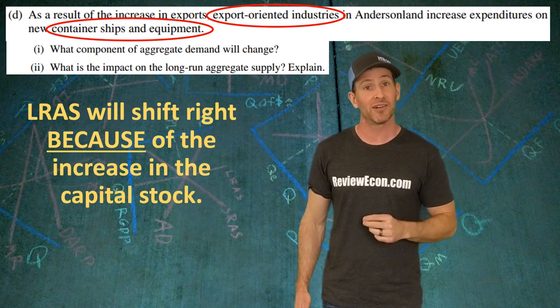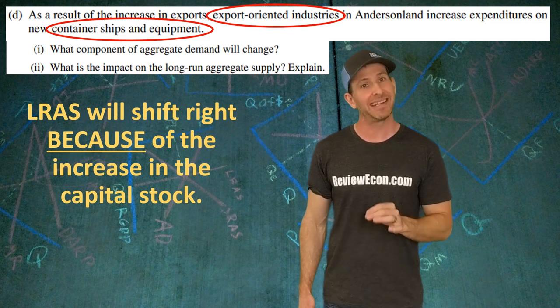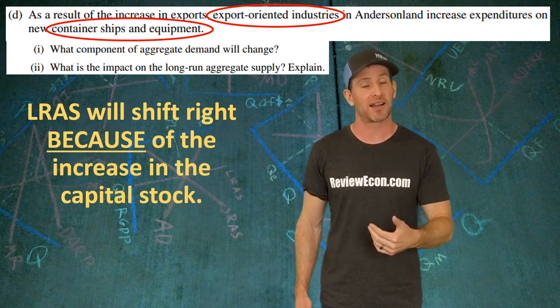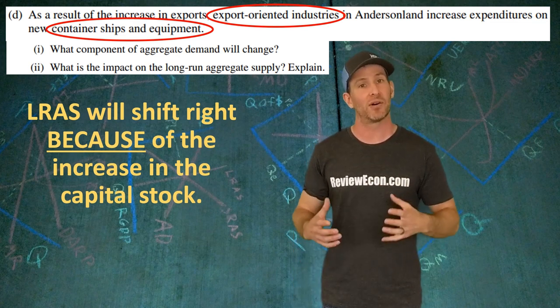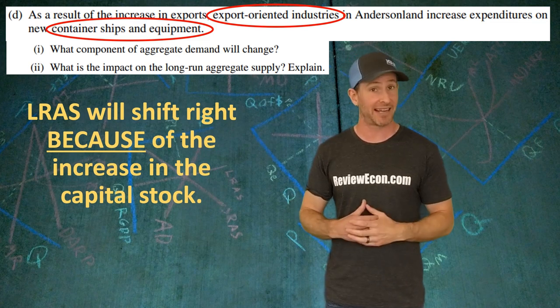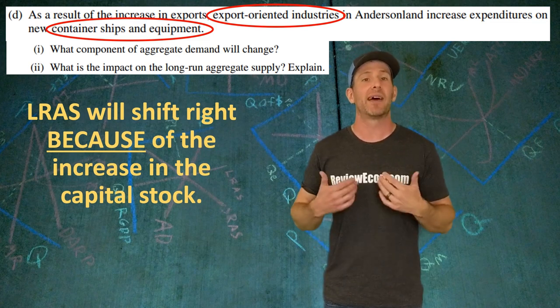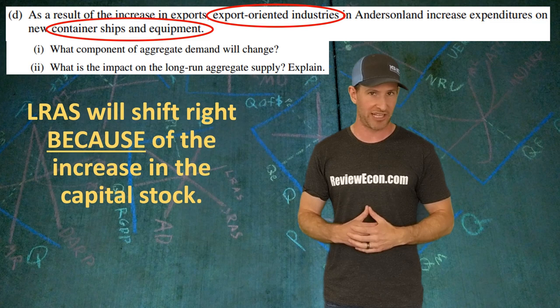And the explain point here is because there is an increase in the capital stock, stock as in stockpile, the amount of capital Anderson Land has is greater, and that increases the potential GDP.